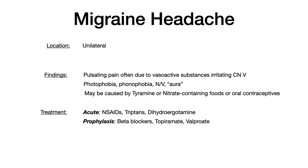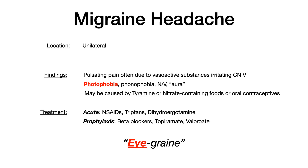Treatment for migraines depends on whether it's acute or prophylactic. Acutely, the answer is NSAIDs, triptans, or dihydroergotamine. For prophylaxis, beta blockers are usually the answer, but topiramate or valproate can also be used. For test purposes: acutely think NSAIDs, prophylaxis think beta blockers. A helpful mnemonic is to say 'eye grain' instead of migraine, which reminds you of photophobia. Test writers may describe a patient who prefers to stay in a dark room — that's photophobia, pointing to migraine.